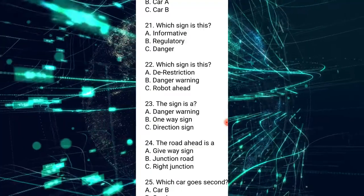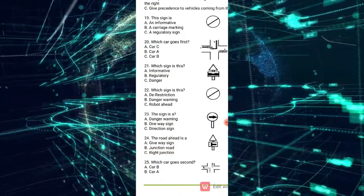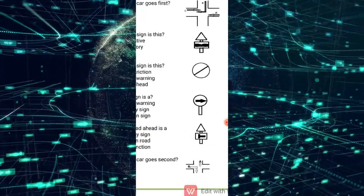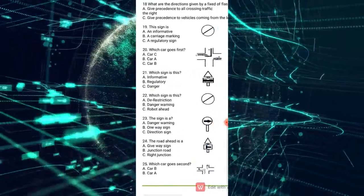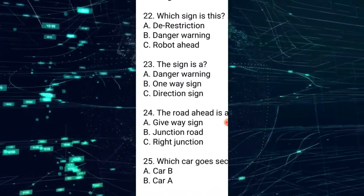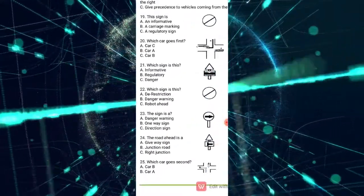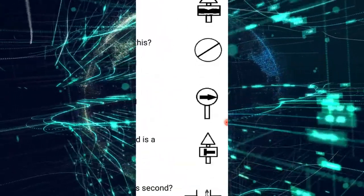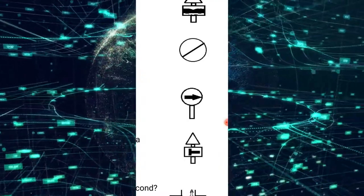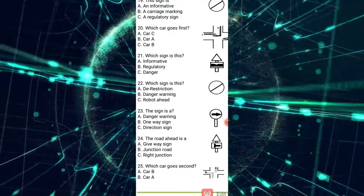Number 24: the road ahead — most people might think this is a T-junction, but it is not. Looking at the answers: A is a give-way sign — no. Looking at answer C, a right junction. This sign is warning you of a side road — specifically a side road coming from the right. So the junction is to the right, and the answer for number 24 is C — a right junction.